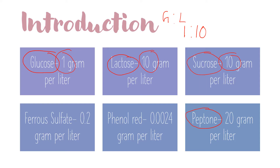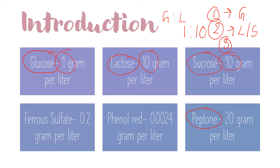The protein source in the medium is peptone — pro-peptone — which serves as the protein source. First, the bacteria utilize glucose. Second, if the bacteria have the lactose or sucrose operon, they utilize lactose or sucrose. If not, they utilize the peptone, which is present at 20 grams per liter.